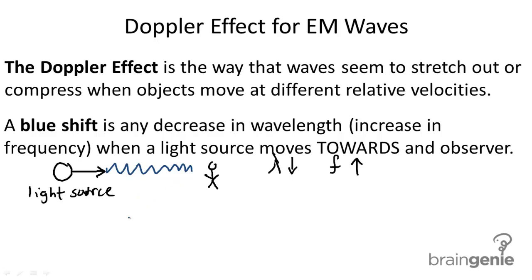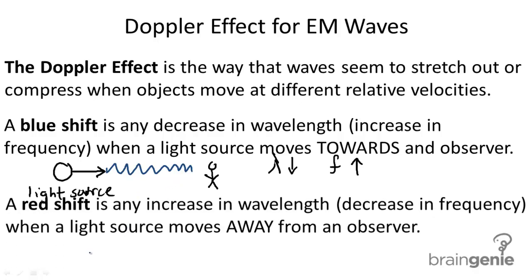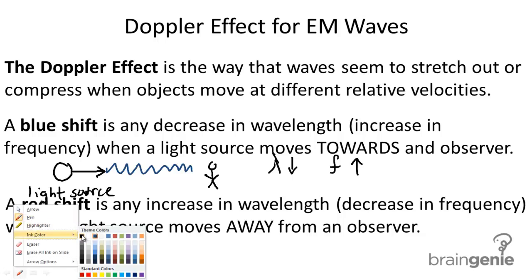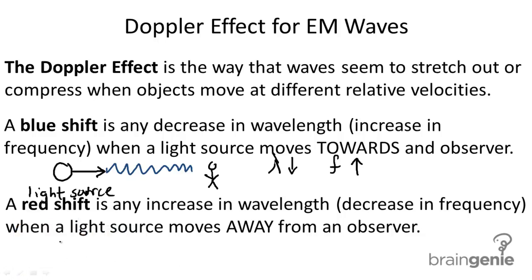The opposite is what we call a red shift. A red shift is any increase in wavelength, decrease in frequency, when a light source moves away from an observer. Setting up the same example, we have the light source here moving away from the observer. What happens with wavelength is that wavelength increases and frequency decreases.